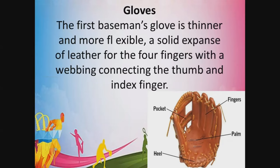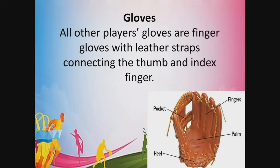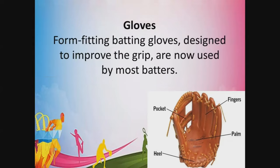The first baseman's glove is thinner and more flexible, with a solid expanse of leather for the four fingers with webbing connecting the thumb and index finger. All other players' gloves are fingered gloves with leather straps connecting the thumb and index finger. Fitting batting gloves designed to improve the grip are now used by most batters.